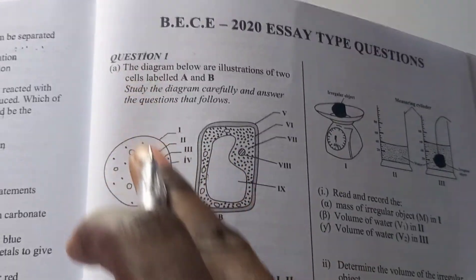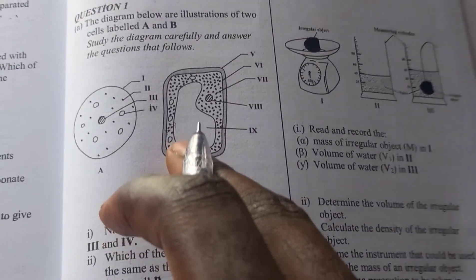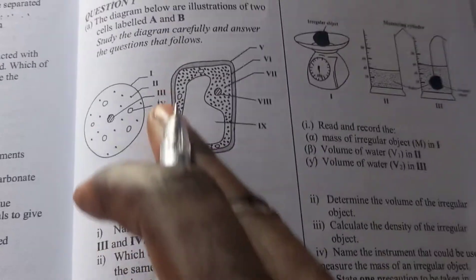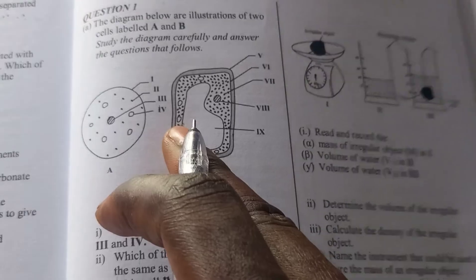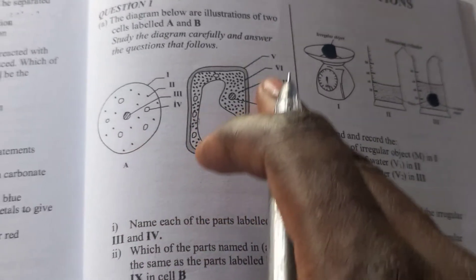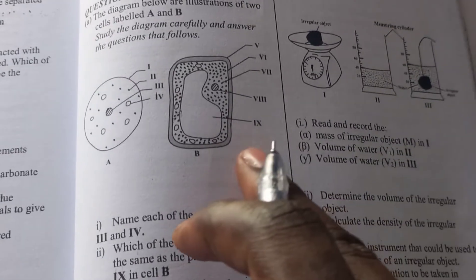In question 1a, you can see on my diagram cells - an animal cell and a plant cell - and they're labeled from I to IV in the animal cell and V to IX in the plant cell.